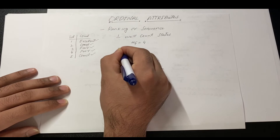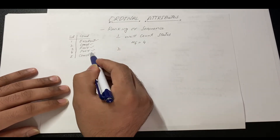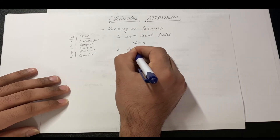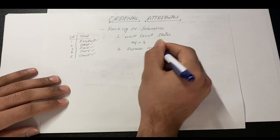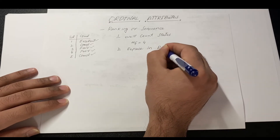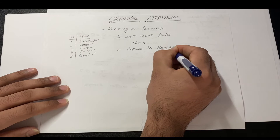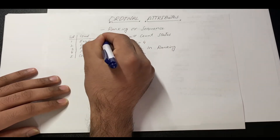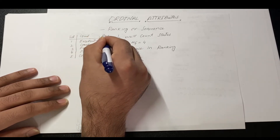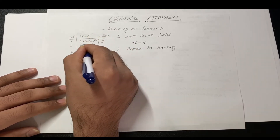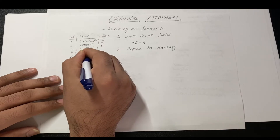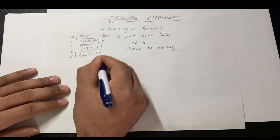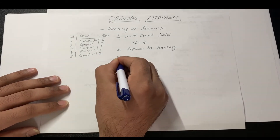The second step is to replace each value with its ranking. For example: excellent is four, good is three, fair is two, and poor is one. A repeated 'good' is still ranked three.